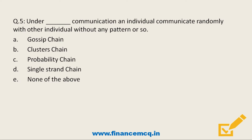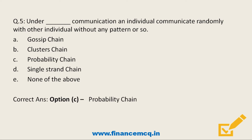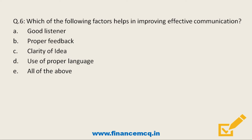Next question: under this type of communication, an individual communicates randomly with other people without any pattern. Option A: gossip chain. Option B: cluster chain. Option C: probability chain. Option D: single strand chain. The correct answer is probability chain. In gossip chain, a person actively conveys information to others around him. In cluster chain, one person tells selected trustworthy persons. In single strand chain, information is passed through a number of persons like a chain.